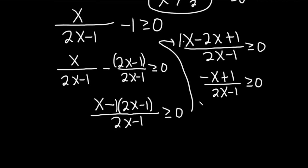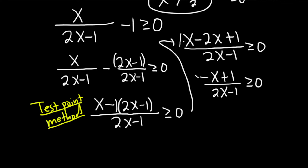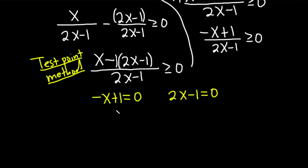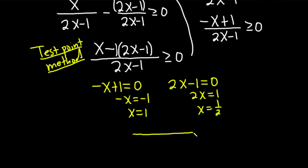We're going to use the test point method. This requires having a single term on one side and zero on the other, which we already have. We set each piece equal to zero: negative x plus 1 equals zero gives x equals 1, and 2x minus 1 equals zero gives x equals 1 half. These are our critical values.